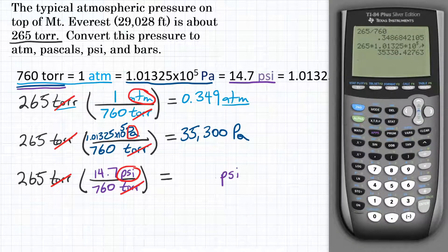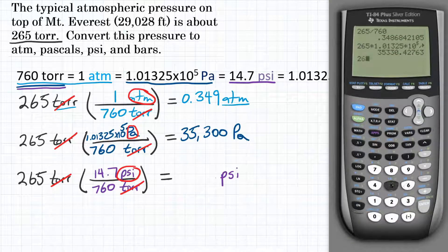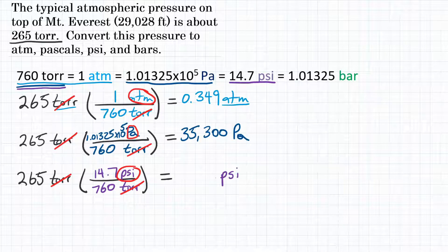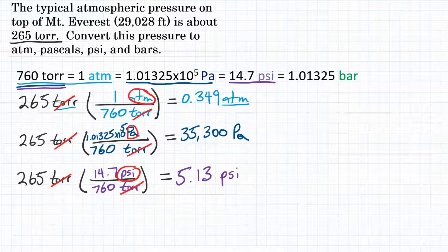Getting our calculator, we will start with 265 multiply by 14.7 and divide by 760. Enter. We get 5.125 and some more past that. Let's round to three significant figures, and we get 5.13. So 5.13 psi. Alright, final one.